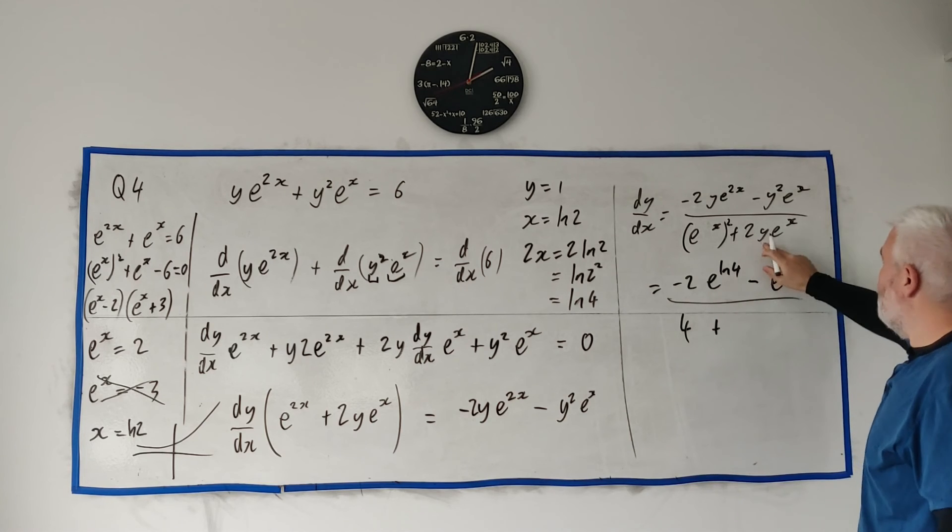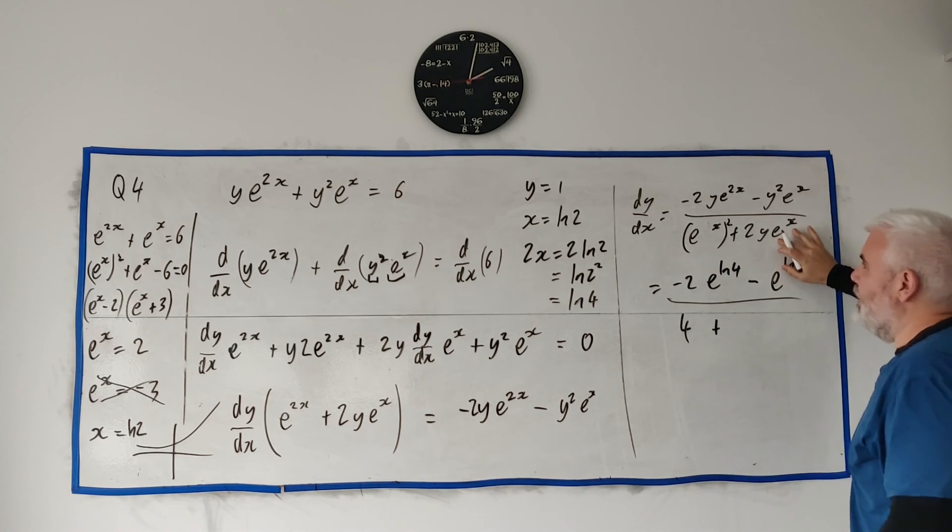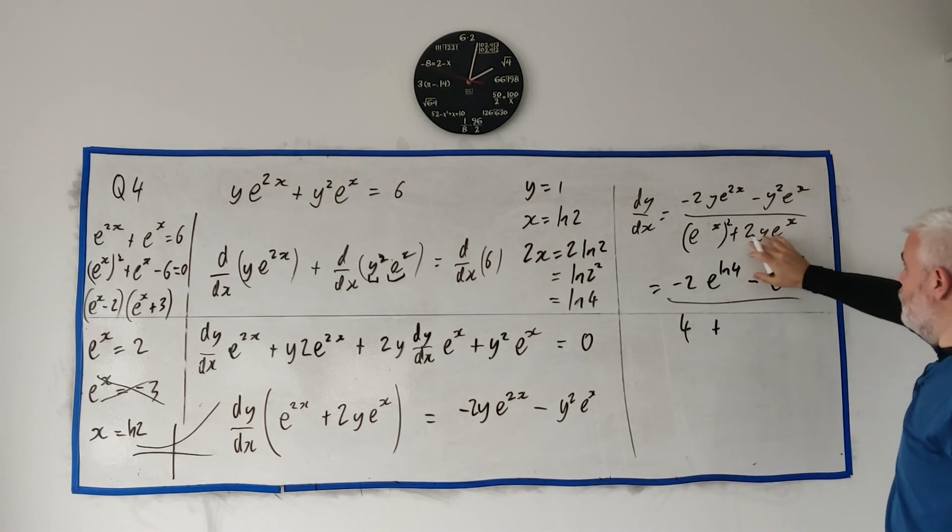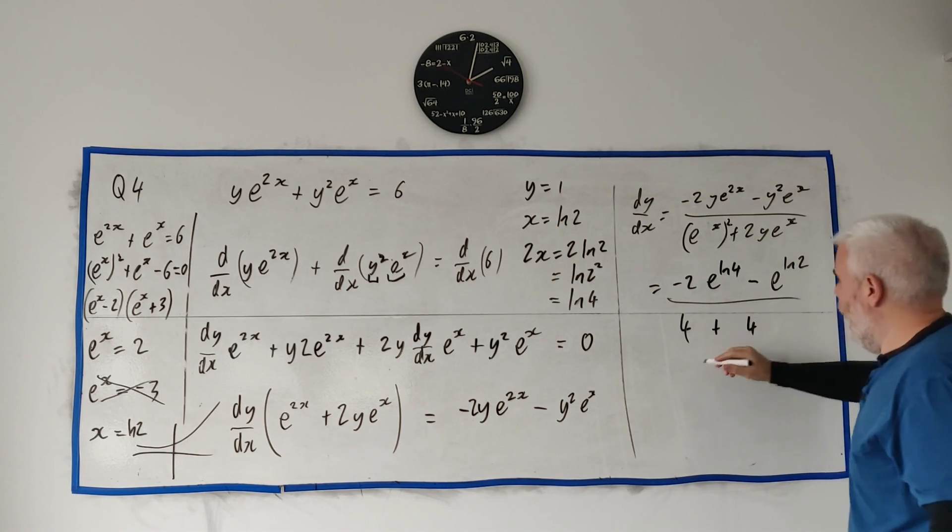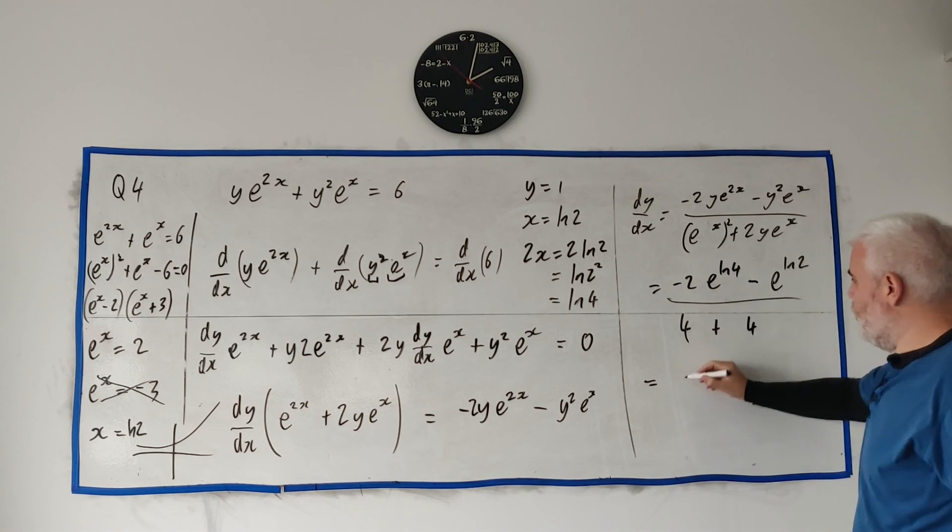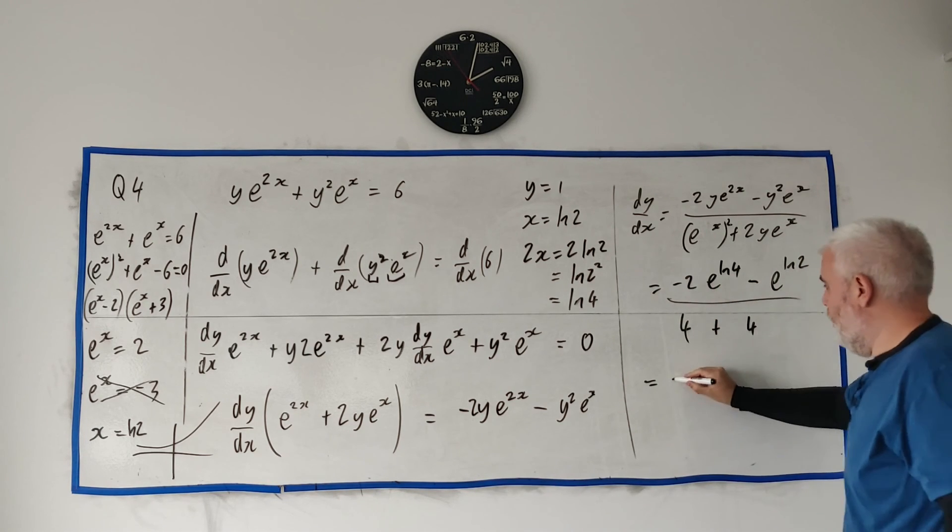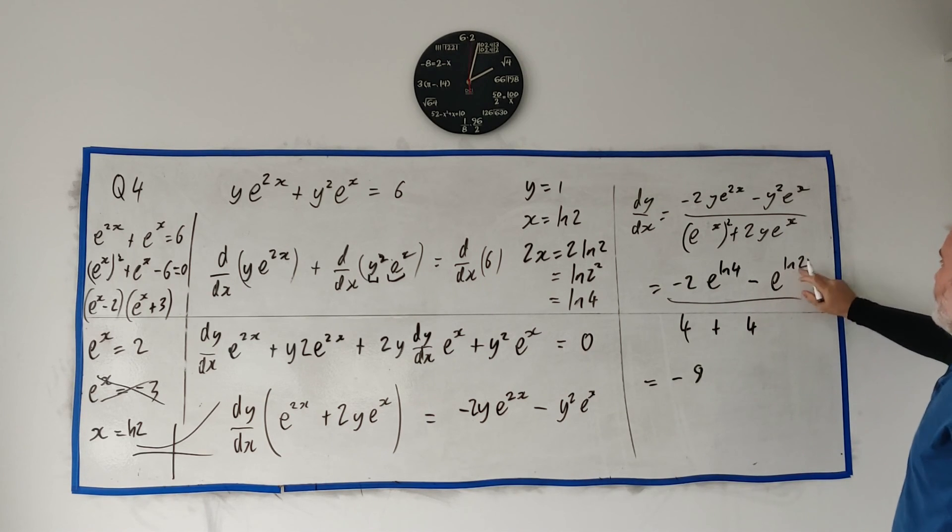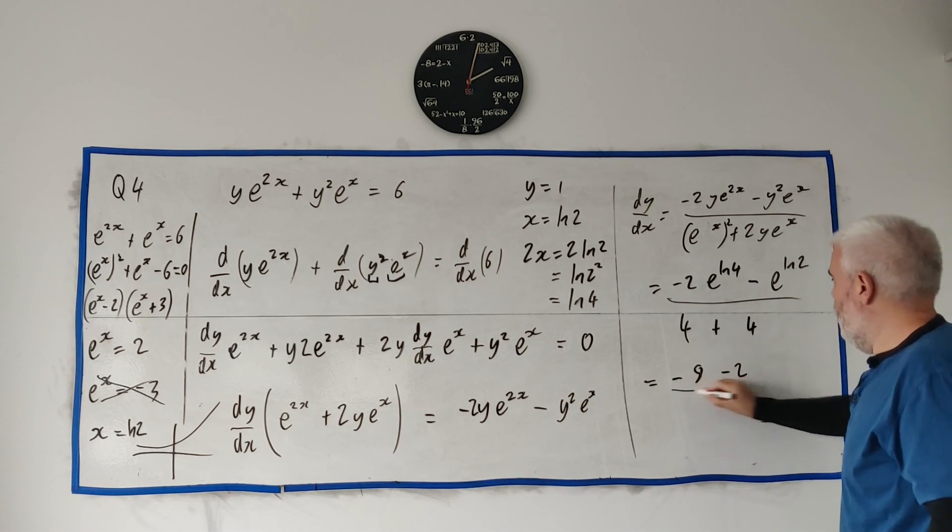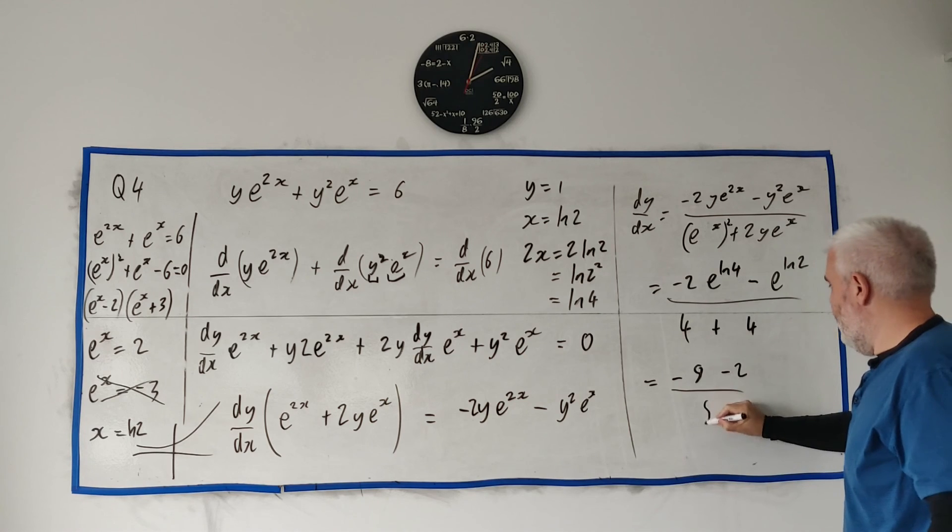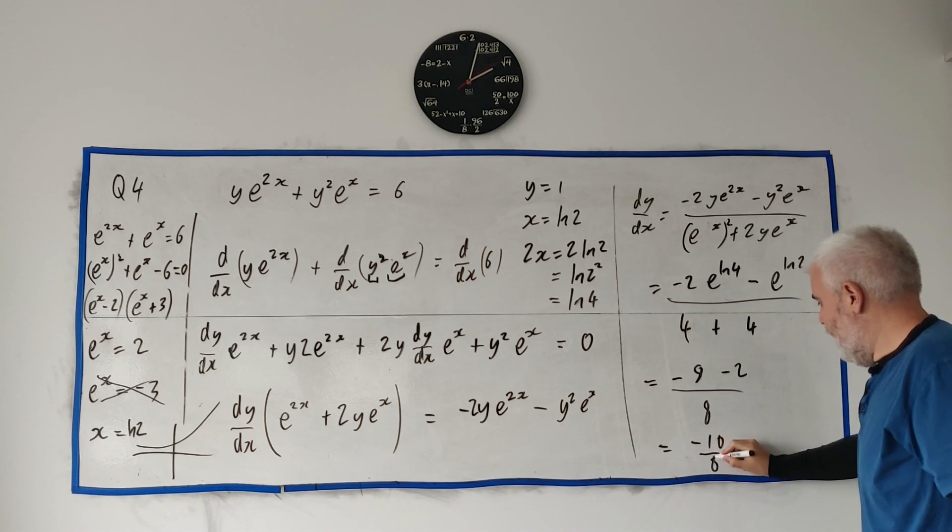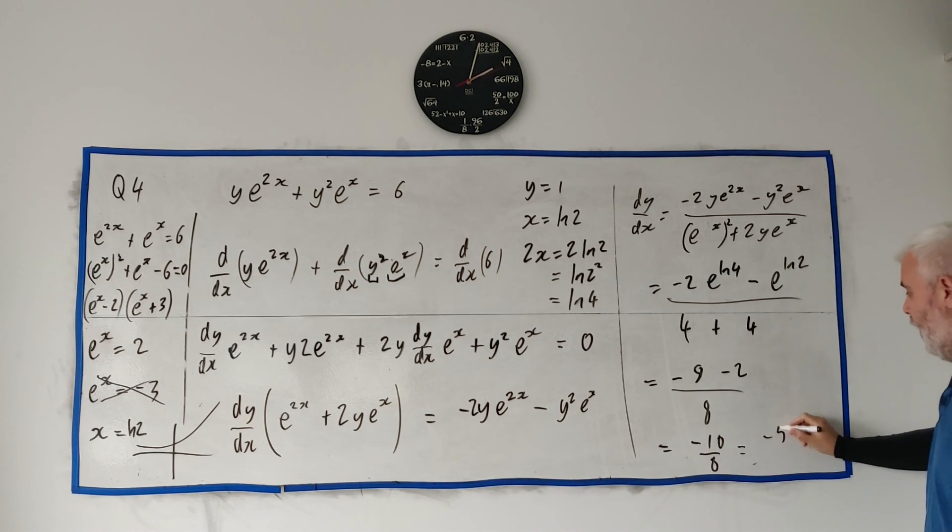Plus 2 times y is 2. E to the x is... E to the natural log 2. That's just 2. So 2 times 2. That's 4. So remember, that top row was actually minus 2 times 4. Minus 8. Minus a 2. Over 8 plus 8. That's a... 4 plus 4 is 8. That's a minus 10 over 8. And I guess that is minus 5 over 4. That's your answer.